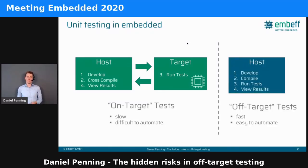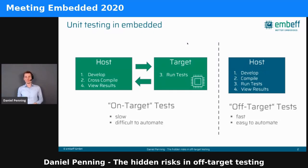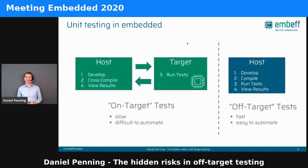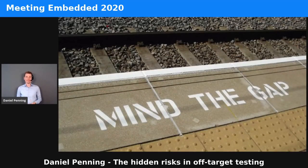That's why certain people — James Grenning included — came up with the off-target test notion. There you develop on your machine, you compile for your machine as well. You do not cross-compile, but instead you compile the unit tests for, say, x86 architecture. Then you can run these tests on your machine and view the results. This is really fast, and it's also easy to automate — you can run it on CI. These advantages make this approach very popular in embedded. And unfortunately, this has problems.